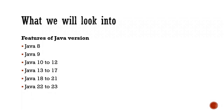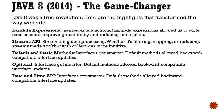We will be looking at the features introduced from Java 8 till 23. We have prepared slides for each individual version — there are different slides which include the features for Java 8, 9, then 10 to 12, 13 to 17, 18 to 21, and 22 to 23. Let's look at each one of them.